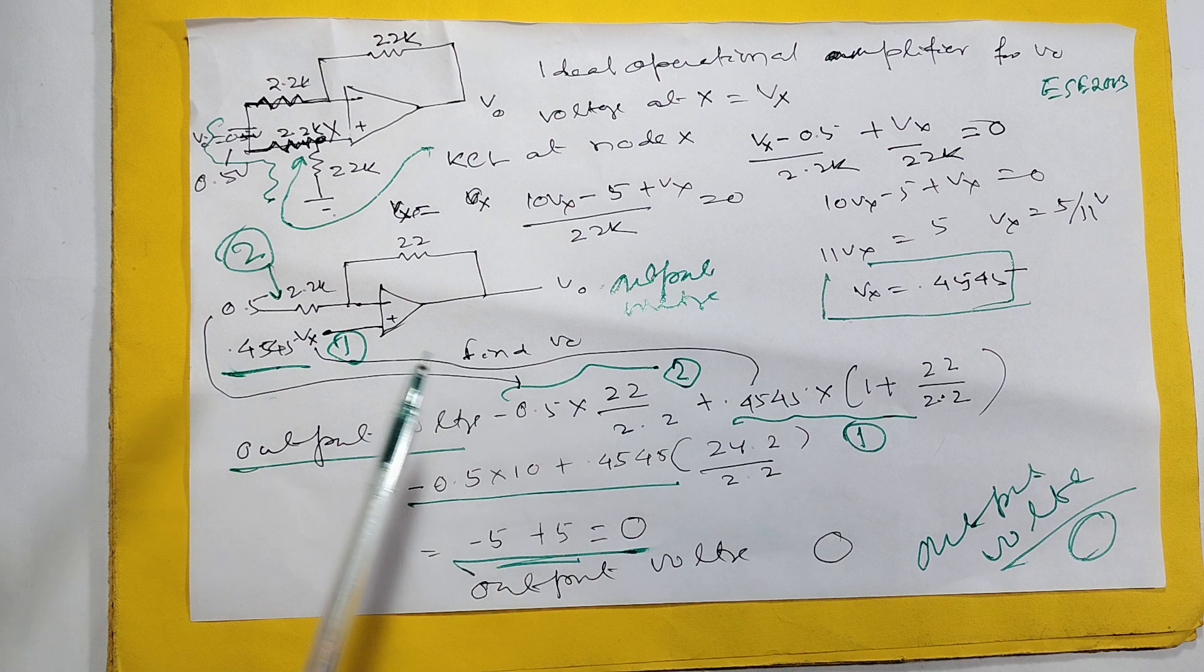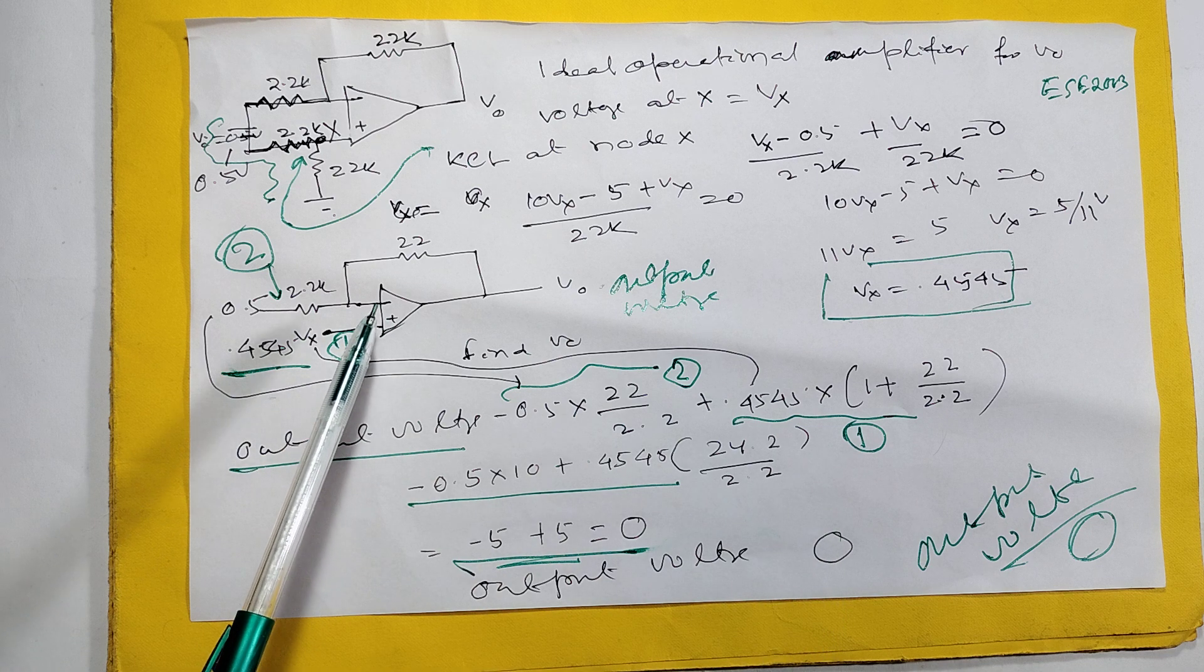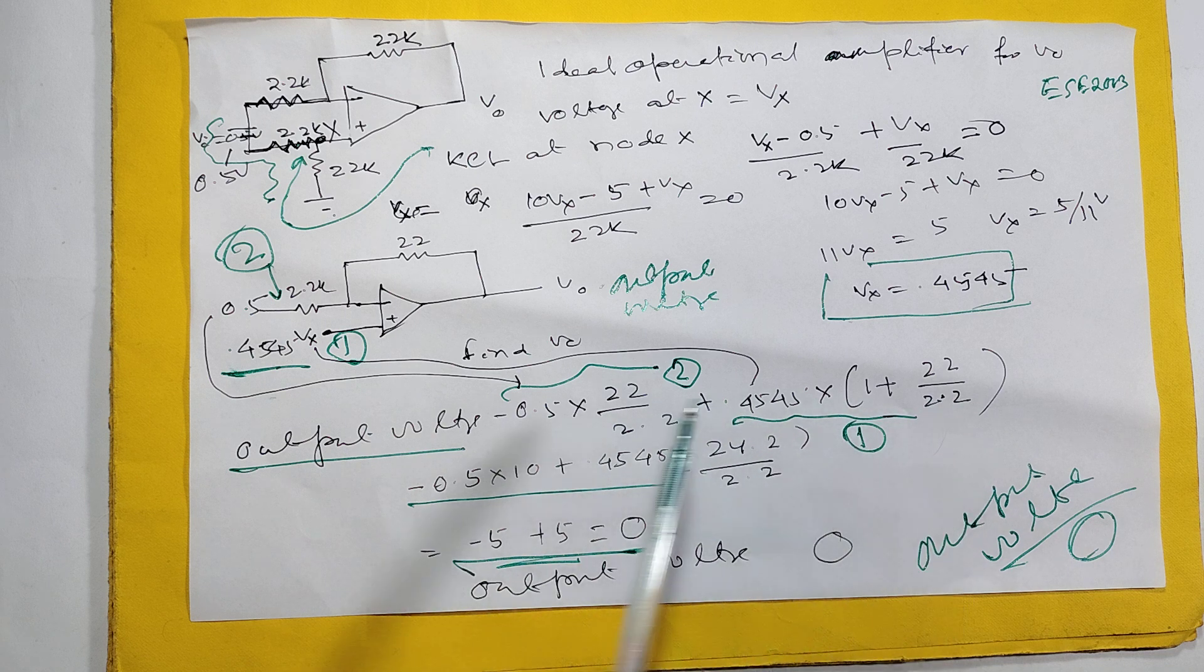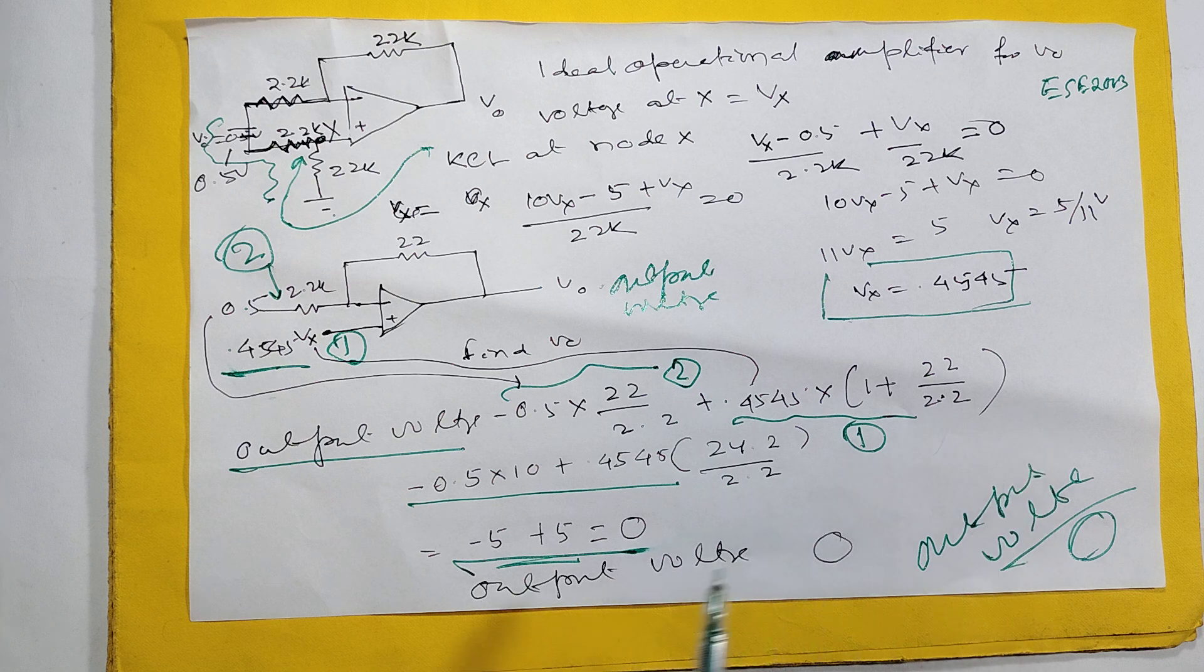Positive. Positive means non-inverting mode. That is 1 plus Rf by R1. So 1.45, Rf 22, Rf 2.2.